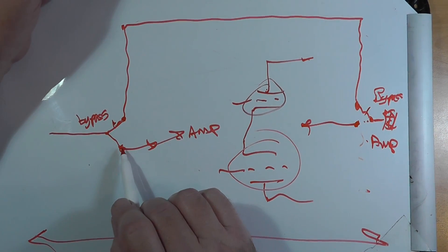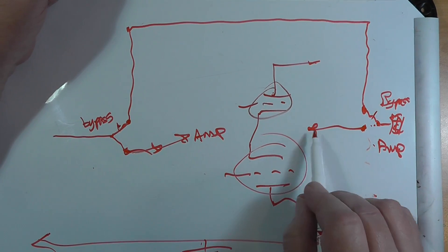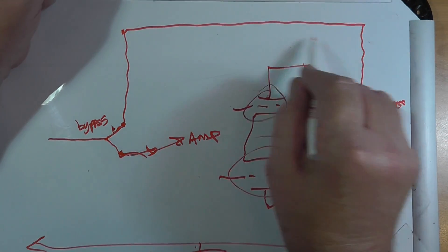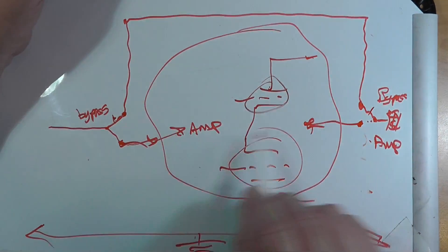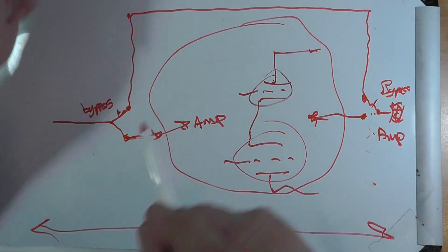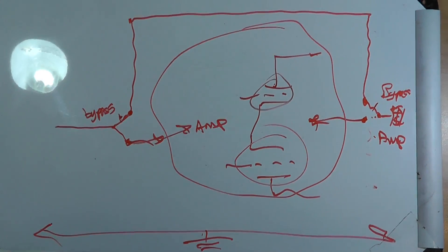If you put it in the amplify position, it uses the amplifier and does the amplifier. That's really all there is to a bypass switch.